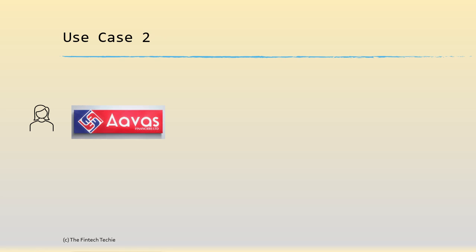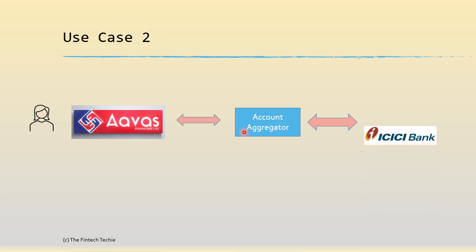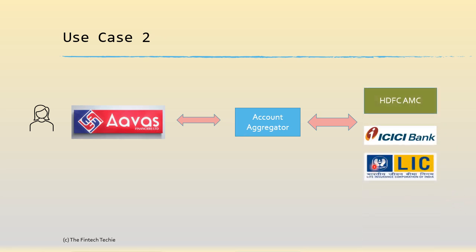One way could be that you give physical copies of documents as proof, or the other way is to use an account aggregator service. If you have given consent, then the NBFC will be able to use the account aggregator to check your balance in another bank, your insurance with LIC, or your mutual fund folios with HDFC. This is a good example of a use case where an account aggregator helps provide all the information to a lender, speeding up the lending process.